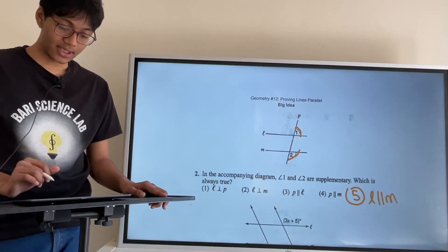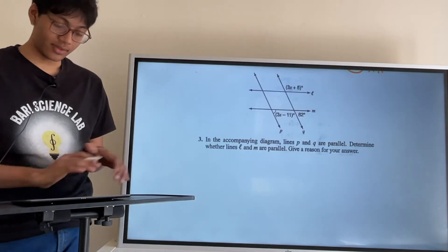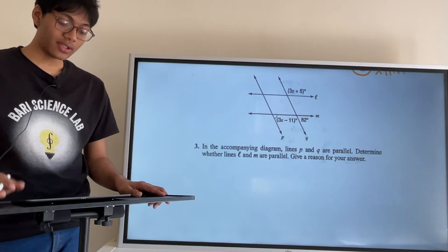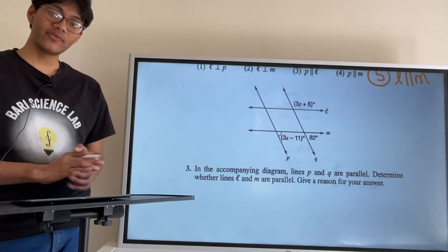And our next problem is as follows in the accompanying diagram. I don't know if you can see that. Lines P and Q are parallel. Determine whether lines L and M are parallel. Give a reason for your answer.